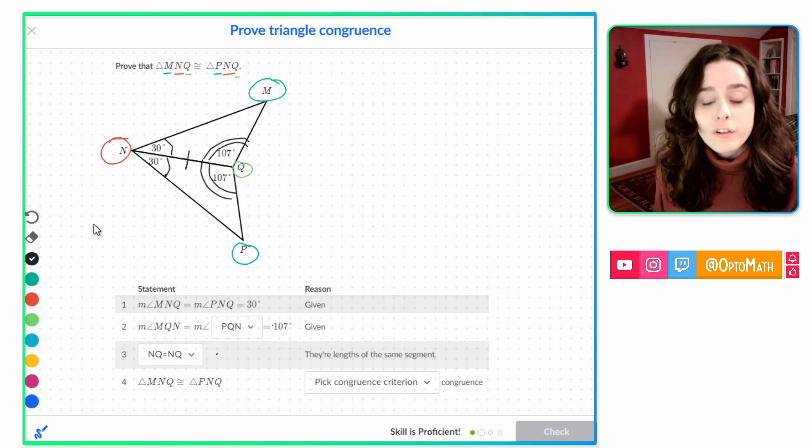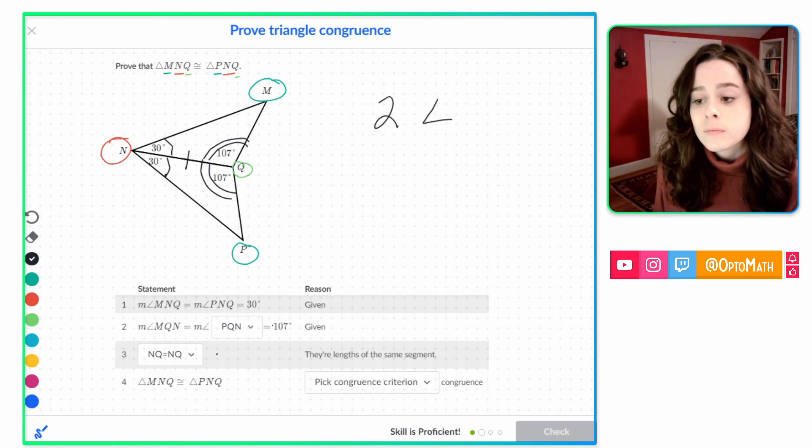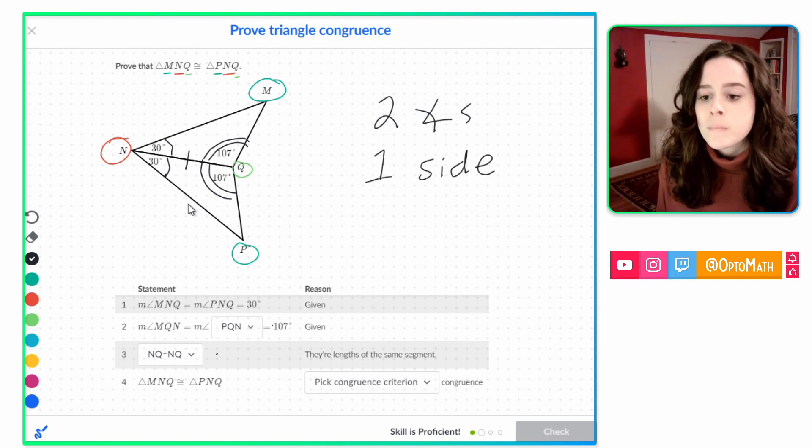And finally, we have to figure out which congruent statement shows that these triangles are congruent. We talked about how it's going to be a reflection, but we still have to determine what kind of triangle congruence theorem. So we've got two angles and one side. So what order are those in? Angle, side, angle.